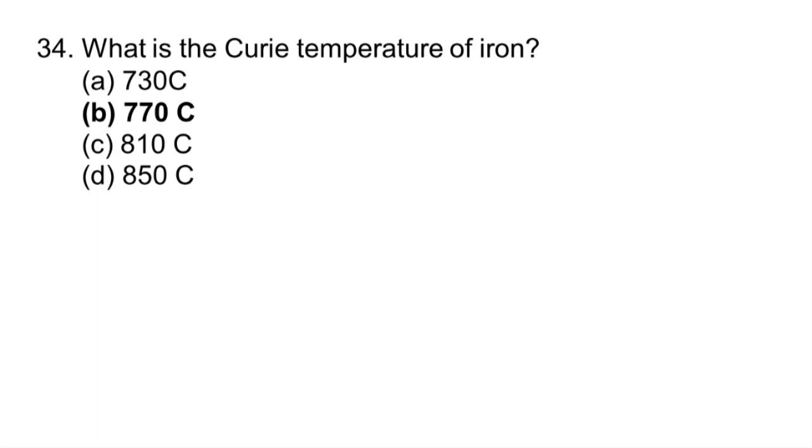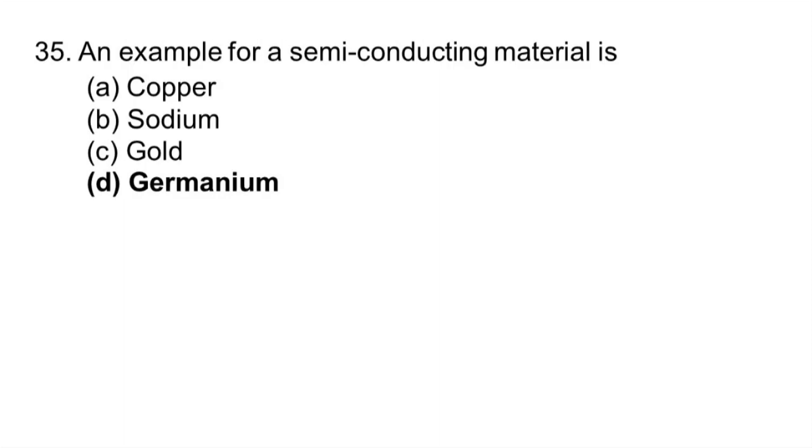What is the Curie temperature of iron? 770 degrees Celsius. An example of semiconductor element: germanium.